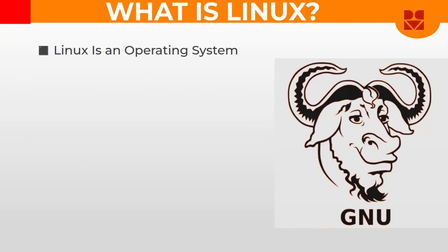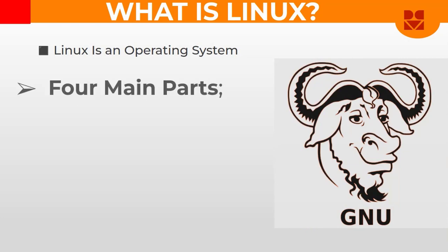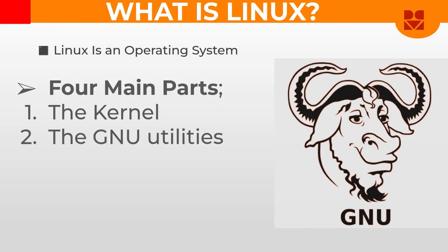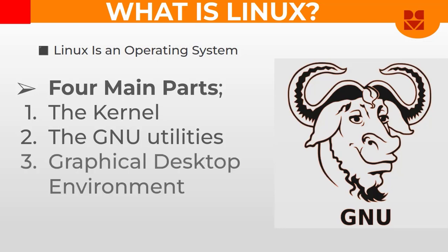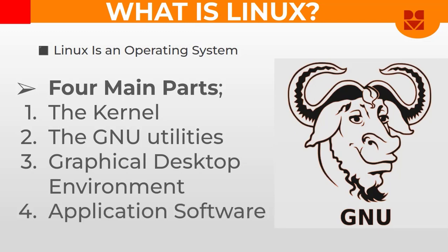The Linux operating system has four main components: the kernel, which is basically the core of the Linux operating system; the GNU utilities — GNU stands for GNU's Not Unix; the graphical environment; and application software.